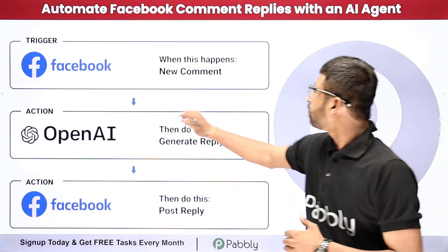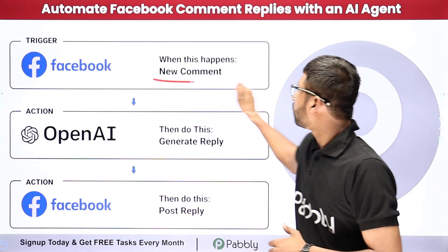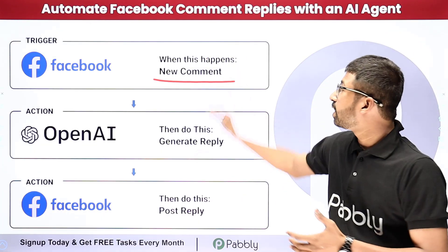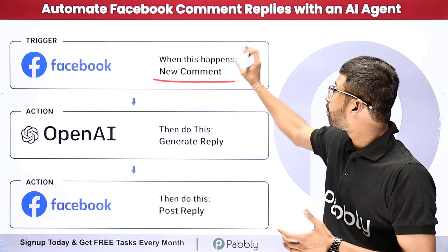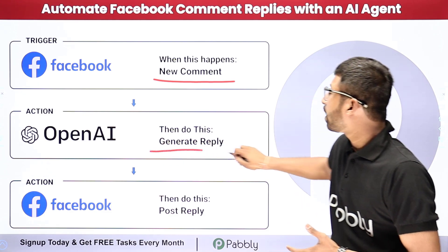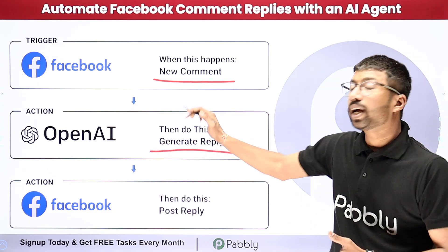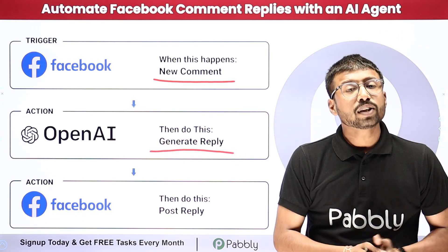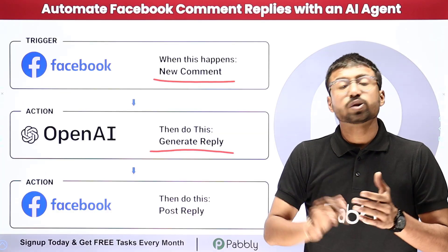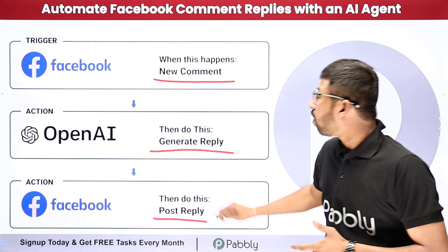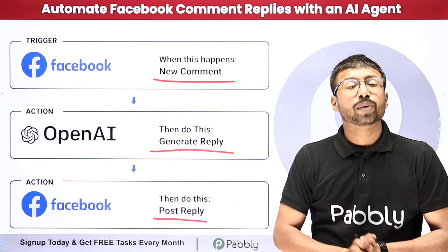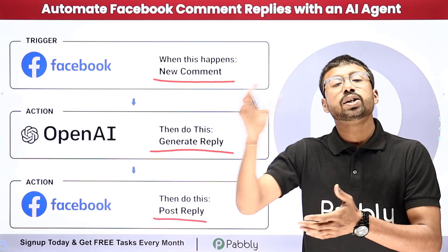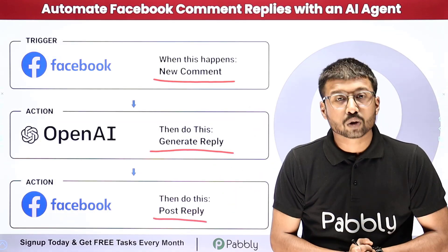In this AI agent, whenever we receive a new comment on our Facebook page post, this AI agent will automatically pick that comment and send it to an AI platform like OpenAI to generate a reply. After that, we are going to post the same reply back on the Facebook page comment, so the AI-generated reply will be posted on the user's comment.